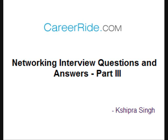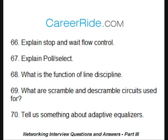Welcome to part 3 of the video on networking interview questions and answers from careerite.com. Explain stop-and-wait flow control. The transmitter sends one message and waits for the acknowledgement. After receiving the acknowledgement, it transmits the next message. Its main advantage is that it is very simple and easy to understand. The main disadvantage is that the speed is very slow — it takes twice as long to transmit data and receive acknowledgement.